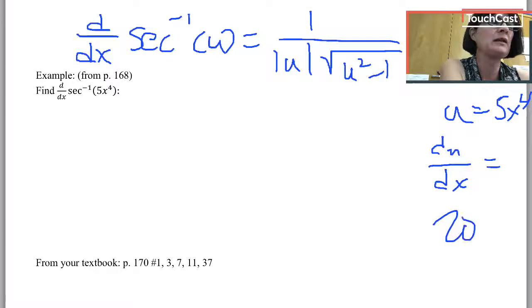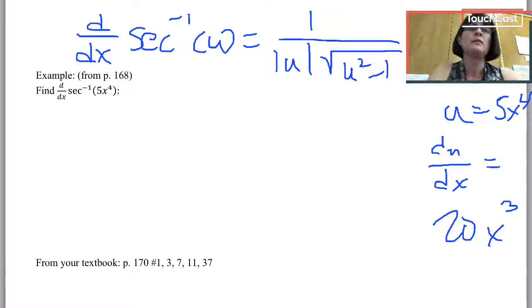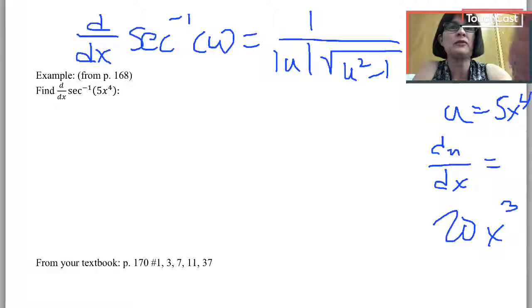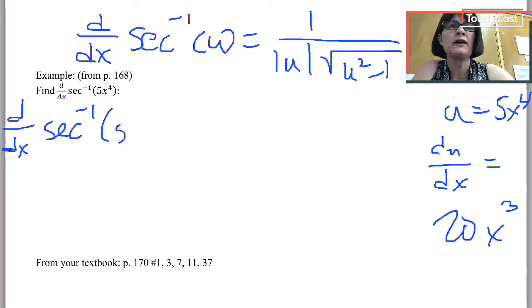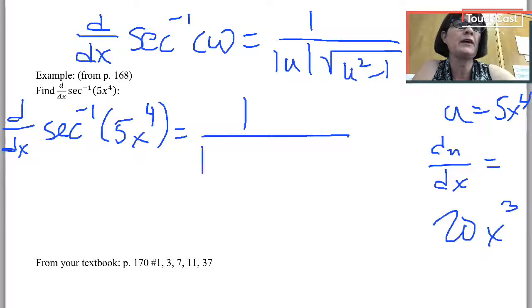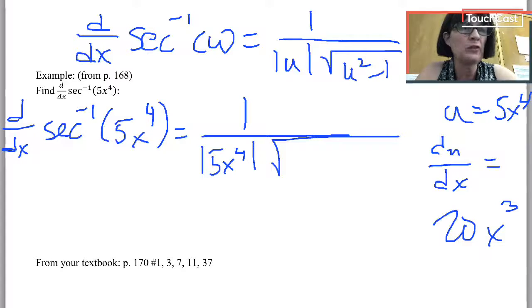That's 20x cubed. So d dx of inverse secant of 5x to the 4th equals 1 over the absolute value of u, which is 5x to the 4th. That should be absolute value bar. Times the square root of 5x to the 4th all squared.